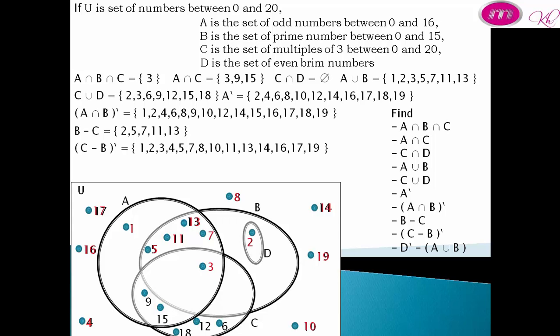Complement of D difference (A union B) equals {4, 6, 7, 8, 9, 10, 12, 14, 15, 16, 17, 18, 19}.